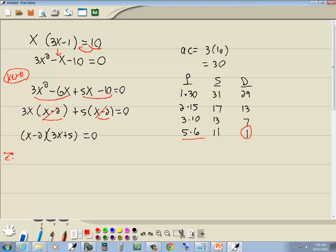Okay. Zero factor property. What that says, you get zero on one side, you factor the other side, you set each factor equal to zero. So I'm going to set x minus 2 equal to zero, and 3x plus 5 is equal to zero.